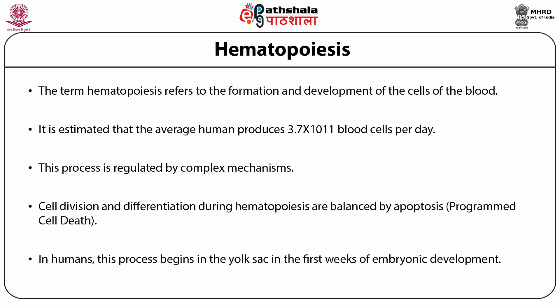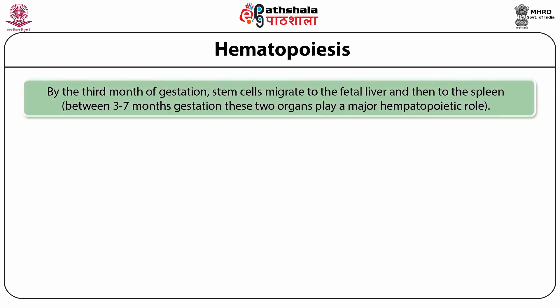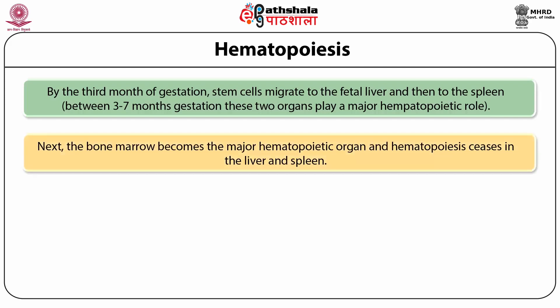In humans, this process begins in the yolk sac in the first weeks of embryonic development. By the third month of gestation, stem cells migrate to the fetal liver, and then to the spleen between 3 to 7 months of gestation, where these two organs play a major hematopoietic role. Next, the bone marrow becomes the major hematopoietic organ and hematopoiesis ceases in the liver and spleen.